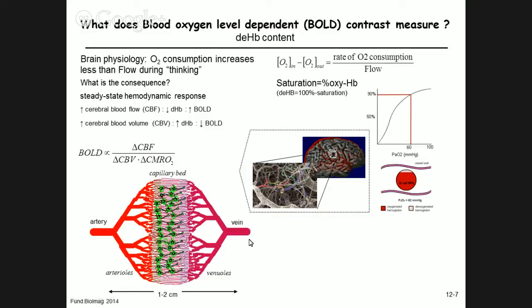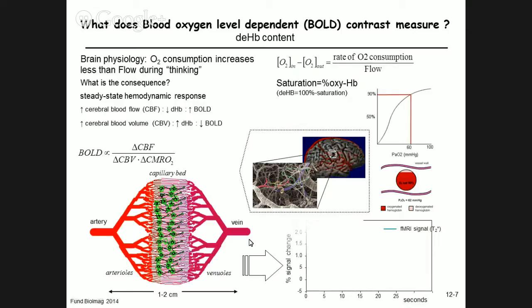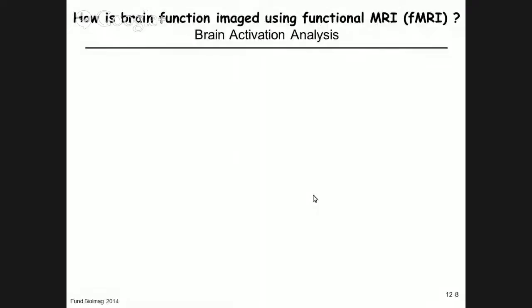Following neuronal activation, blood flow increases, deoxyhemoglobin decreases, and blood gets reddish. Looking at the time course — horizontal axis in seconds, vertical axis in percent signal change — we see about a 2% signal change. A few seconds after activation there is a change in the T2 star-weighted MRI signal from the gradient echo sequence, on the order of a few percent. This is essentially the basis for determining what brain areas are involved in what brain function.